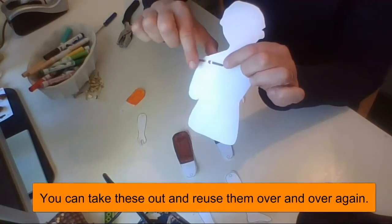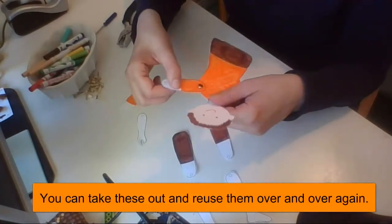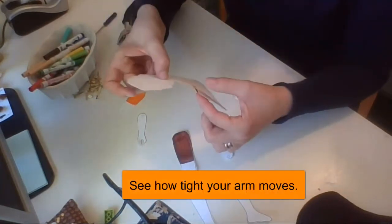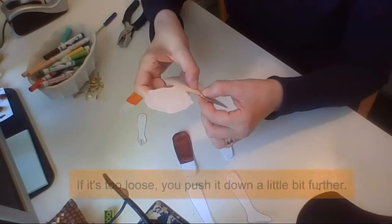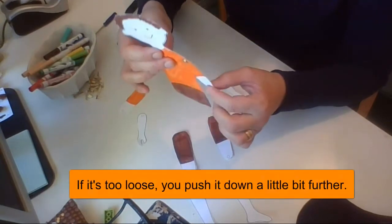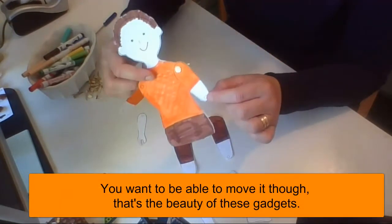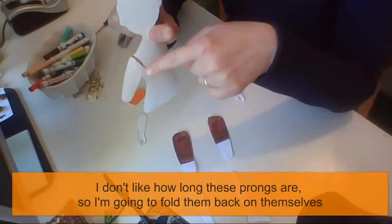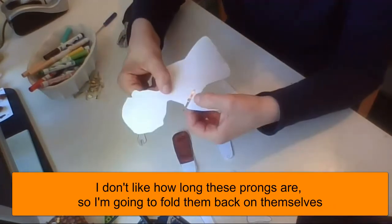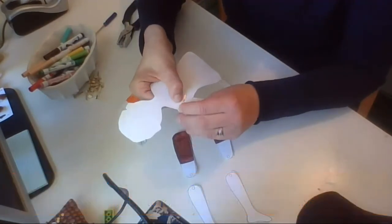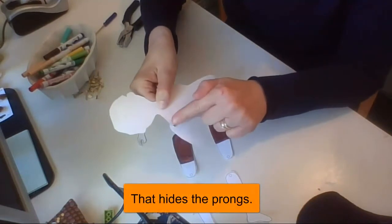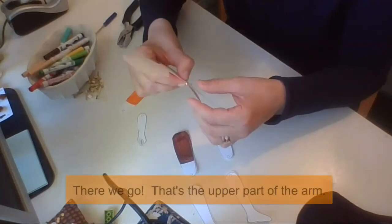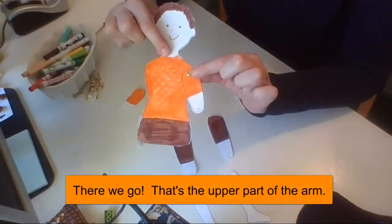Now you can reuse these over and over again. See how tight your arm moves. Is it tight? If it's too loose, you can make this, you can push it down a little bit further and make it a bit tighter. You want to be able to move it though. That's the beauty of these little gadgets is that you can move them. I don't like how long these prongs are. I'm going to fold them over one more time just in half. And that hides it. See I've sort of folded it half back on itself. I'm going to fold it over again. There we go. So that's the upper part of the arm.